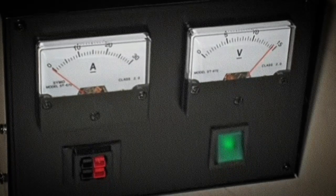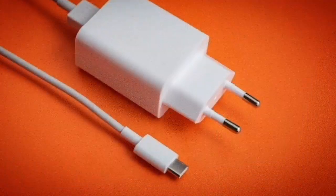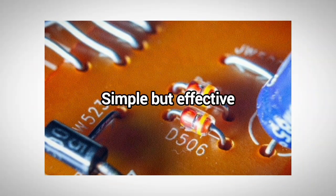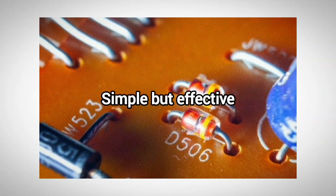You'll find Zener diodes in power supplies, chargers, and voltage protection circuits. They're simple but incredibly effective at preventing damage from voltage changes.